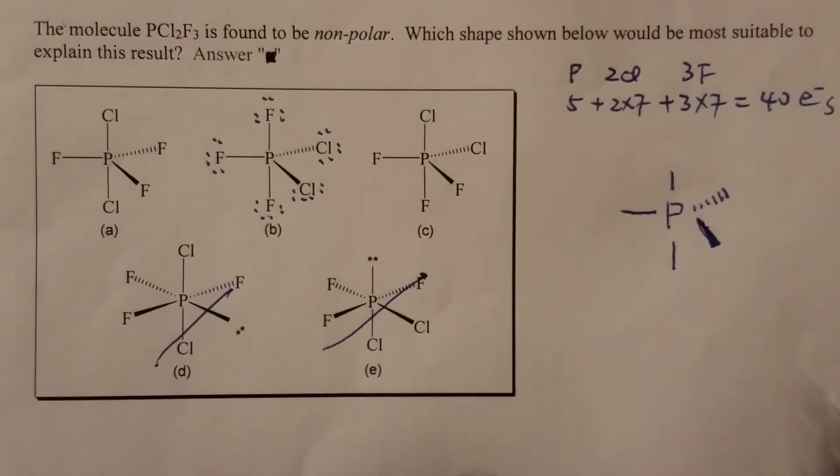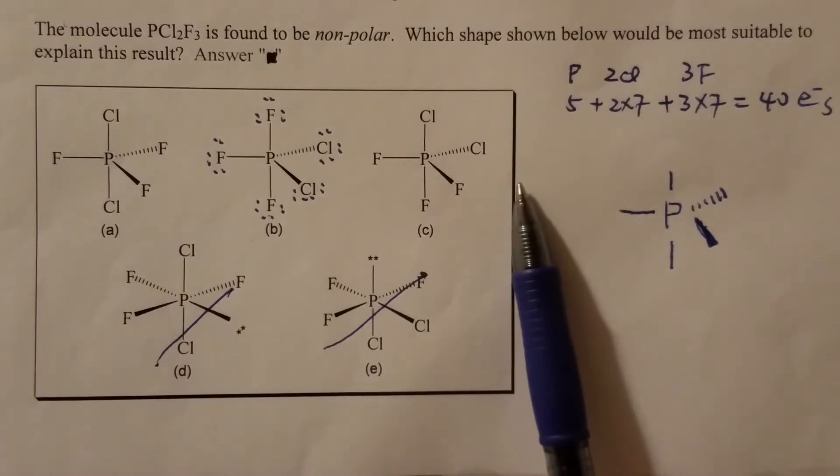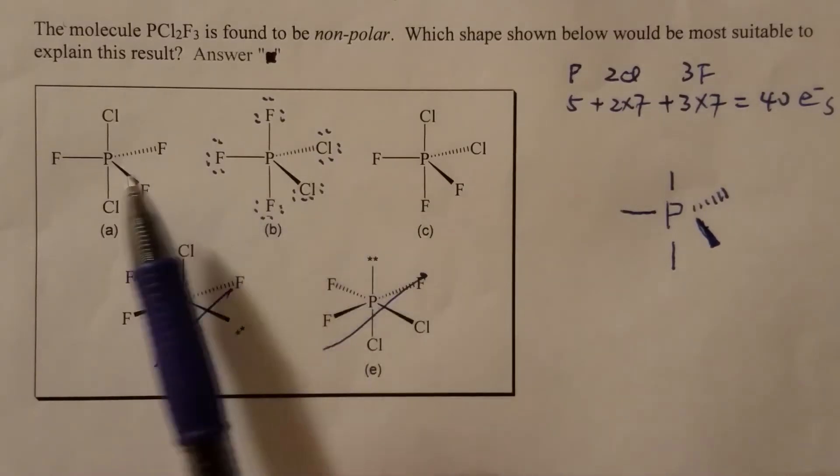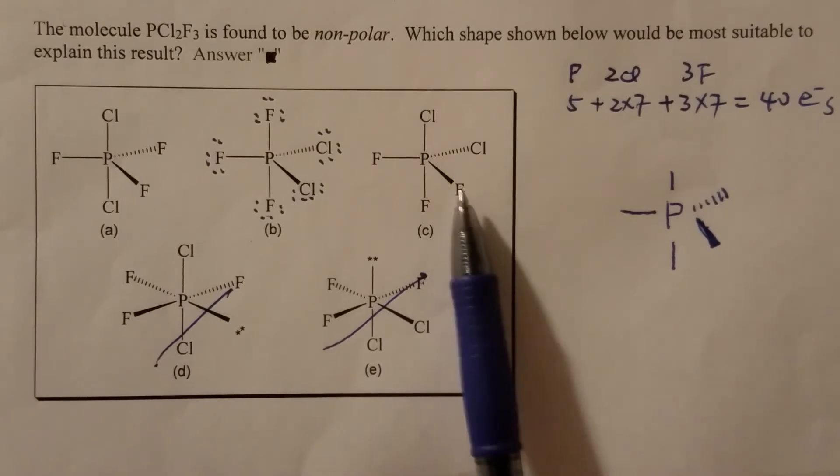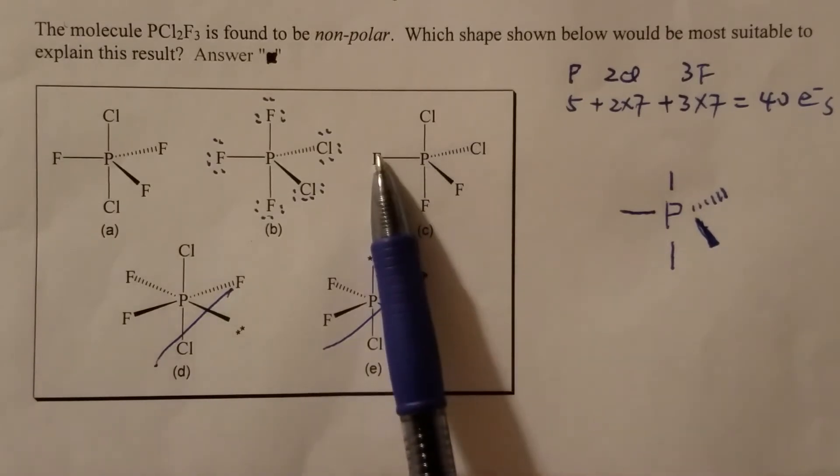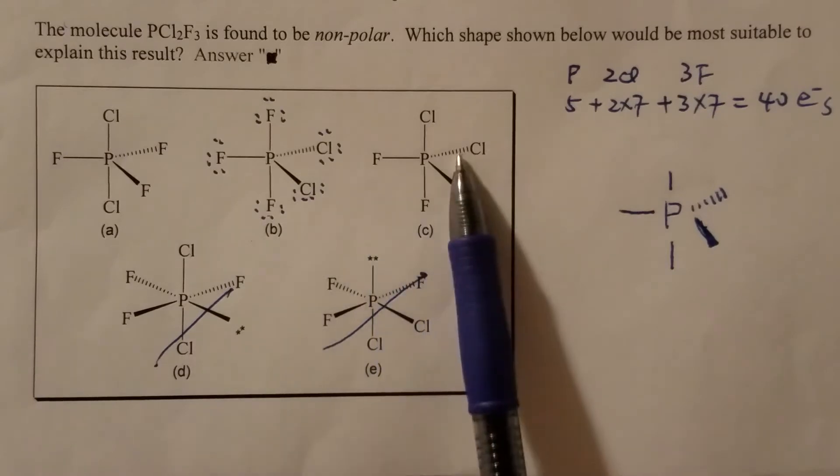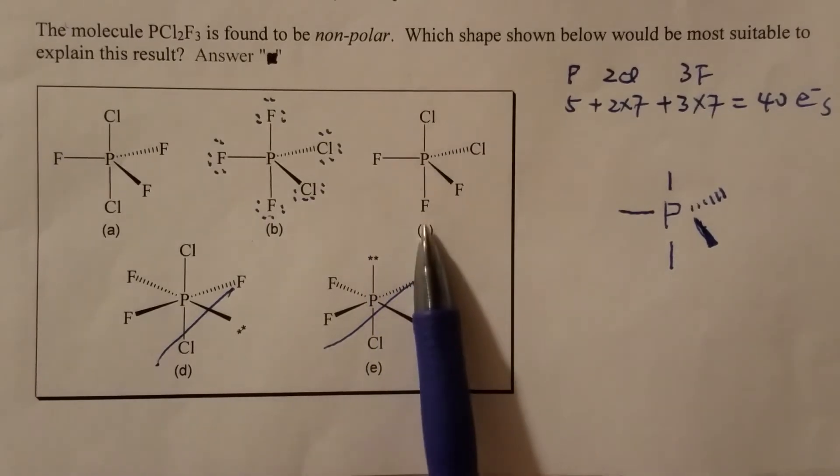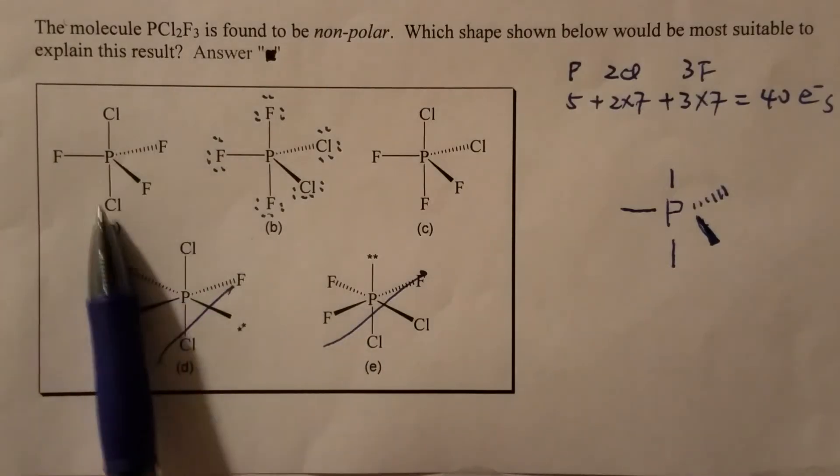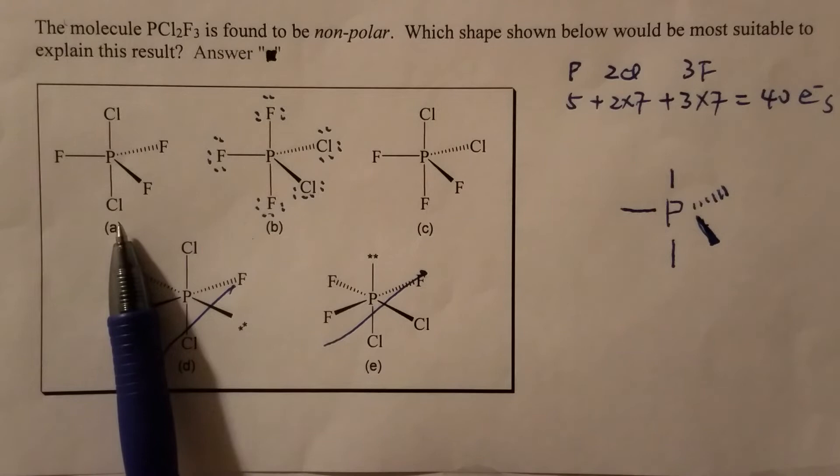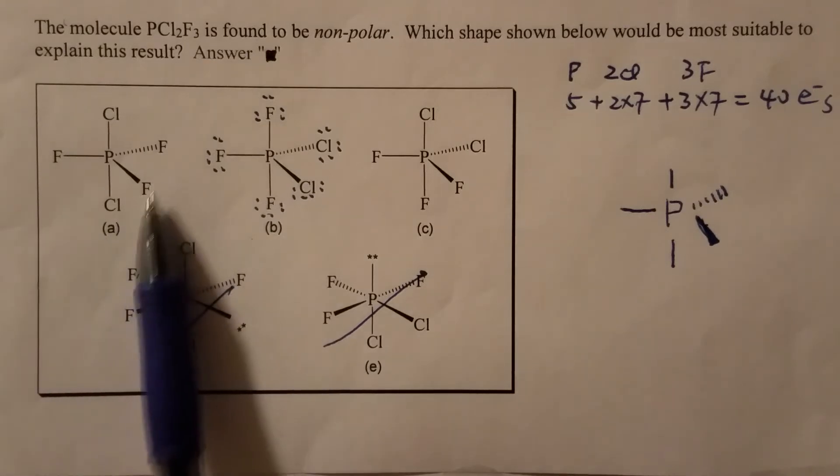But symmetry is still important. So we can divide this molecule into two parts. One is we look at the equatorial positions, and another one is look at the axial positions. Symmetry is still important in each of the two parts I just mentioned.